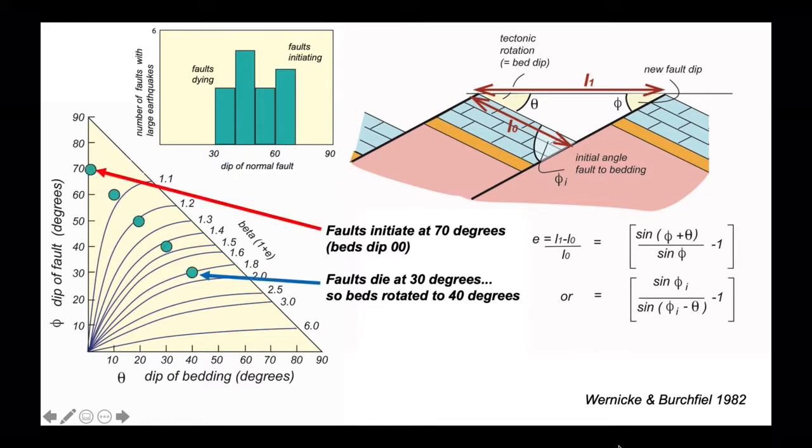So the faults initiate at 70 degrees on the graph and they fall down this trajectory, and they die at 30 degrees so the beds are rotated 40 degrees. So the faults are locking up at a stretching factor of about 1.8.